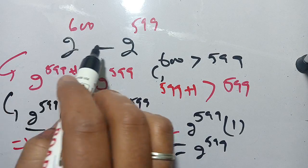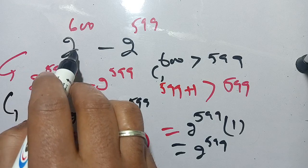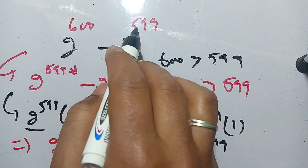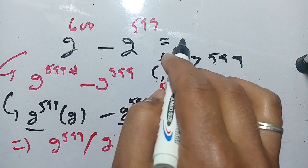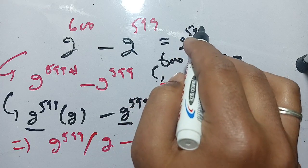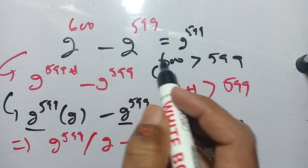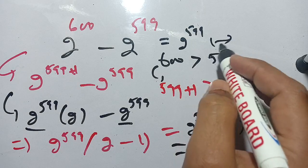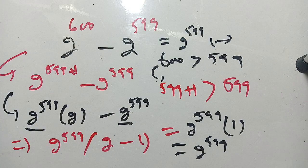Thus our final solution is 2 raised to power 600 minus 2 raised to power 599 is equal to 2 raised to power 599. This is today's problem. If you are new here, make sure to subscribe to the channel for more math videos. See you next time, till then bye!